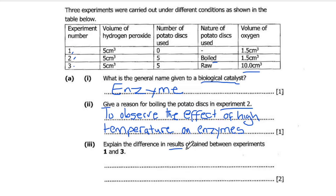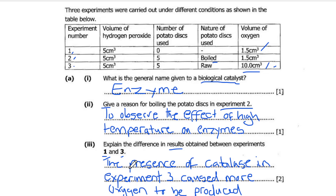Next part: Explain the differences in the results obtained between experiments 1 and 3. From the table we can see that in experiment 1 only 1.5 cubic centimeters was produced, while in experiment 3 we have 10 cubic centimeters — a much higher production of oxygen. This means that the catalyst speeds up the rate of the chemical reaction. Without the catalyst the reaction is slower, but with the presence of the enzyme catalyst in the raw potato in experiment 3, much more oxygen is produced.